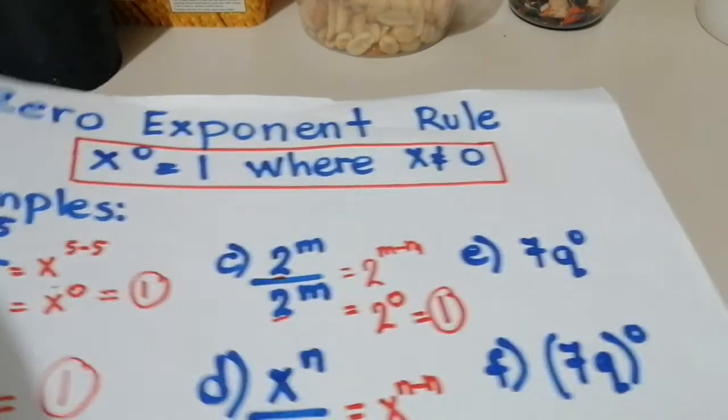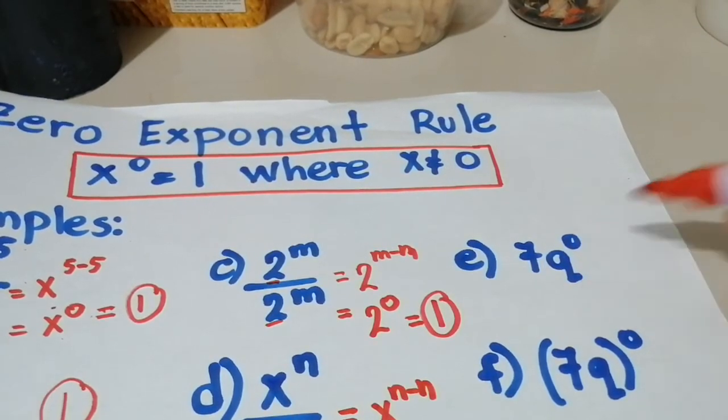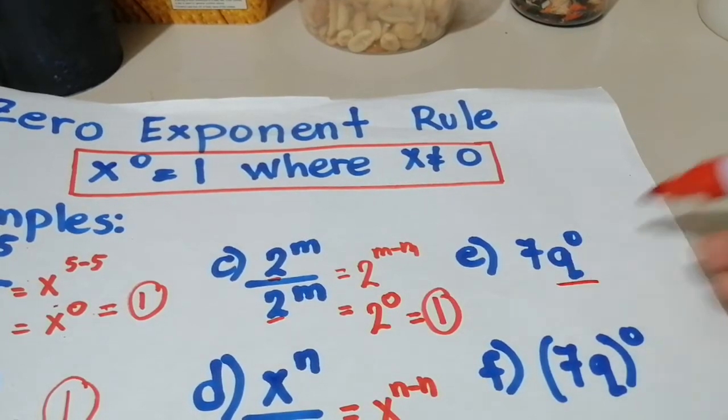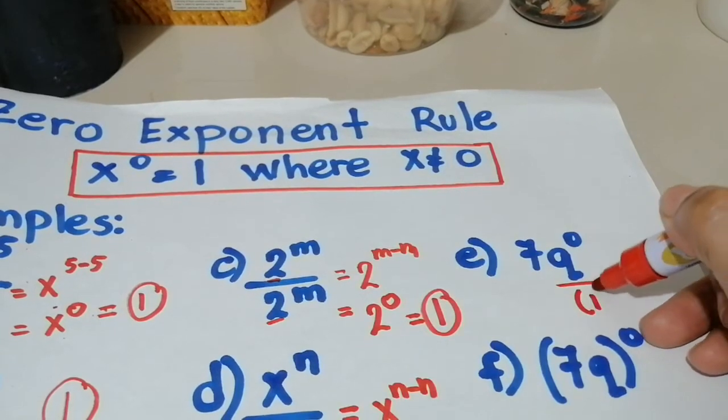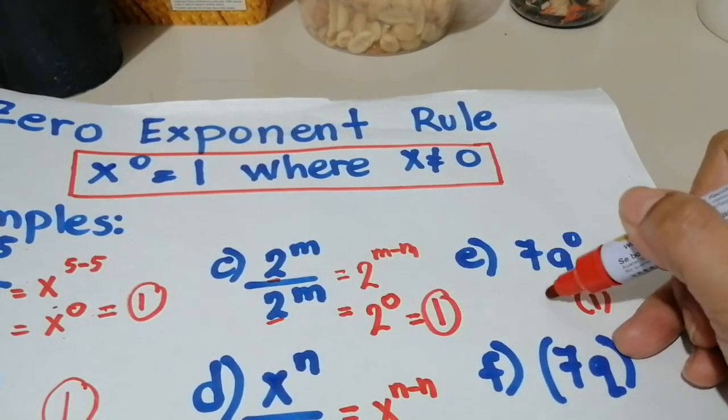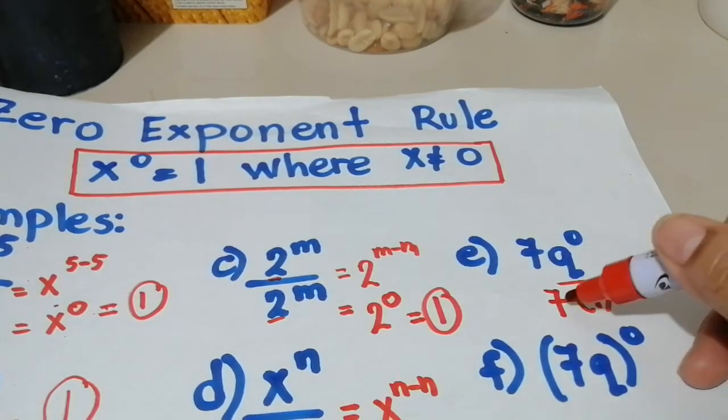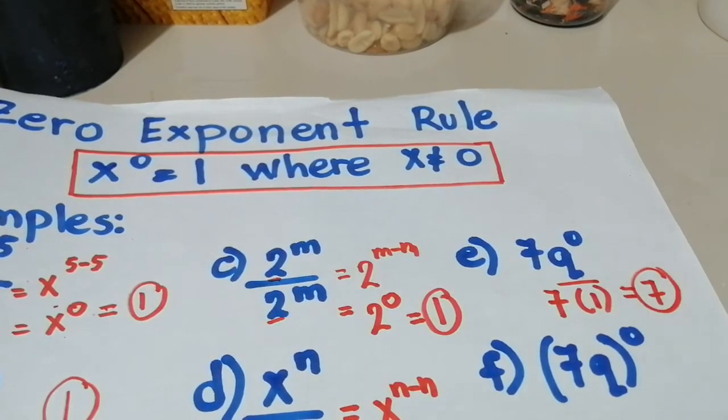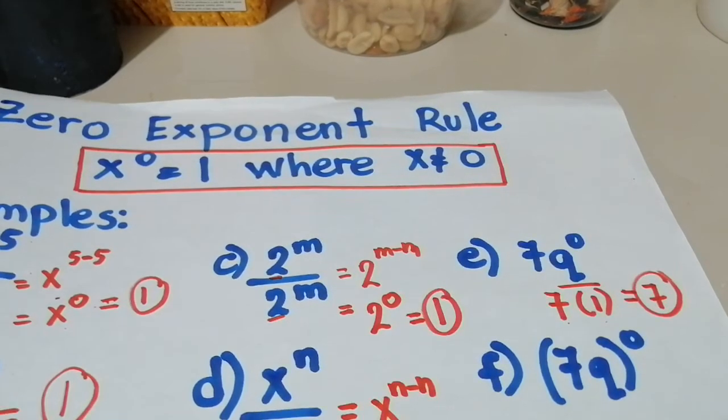Next is this one, 7q raised to 0 power. So what are we going to do? We have to simplify this first. q raised to 0 power is always equal to 1. Kasi nga, exponent niya 0. And then, here we just have to copy the 7. So the final answer for this one is 7 times 1 is equal to 7. So sinimplify lang natin yan, and then we do multiplication.